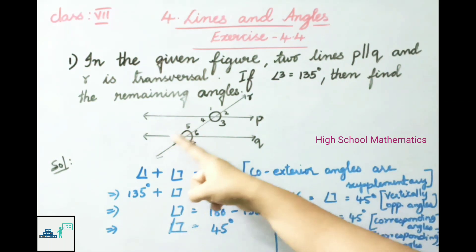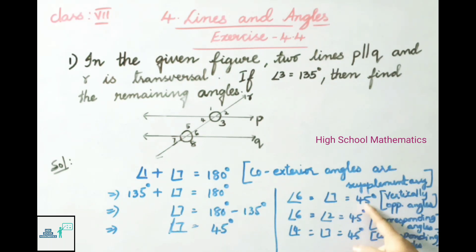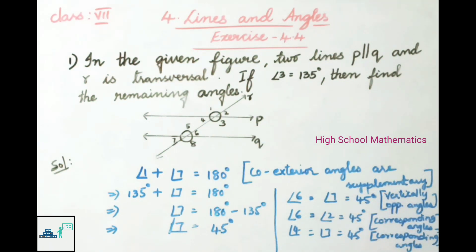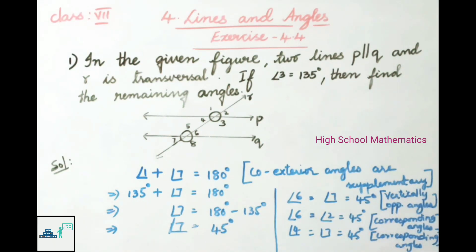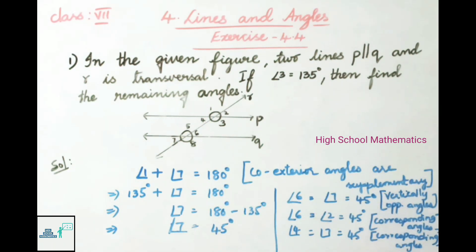Angle 6 and angle 7 are equal because these both are vertically opposite angles. So angle 6 equals angle 7 equals 45 degrees. Next, angle 6 and angle 2 are equal because those both are corresponding angles. So angle 6 and angle 2 are equal to 45 degrees. Angle 4 and angle 7 are also equal because those both are corresponding angles. Therefore angle 4 equals angle 7 equals 45 degrees.